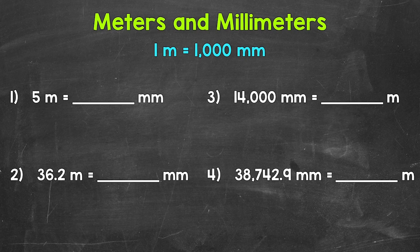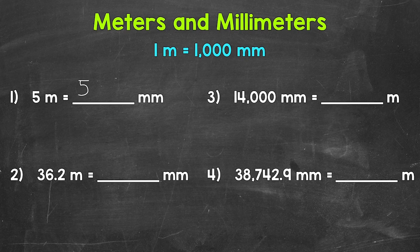Let's jump into number one, where we have five meters equals how many millimeters? Well, remember, each meter equals one thousand millimeters. So we have one thousand millimeters five times — in other words, five times one thousand. And that gives us five thousand. So five meters equals five thousand millimeters. When we go from meters to millimeters, we multiply by one thousand.